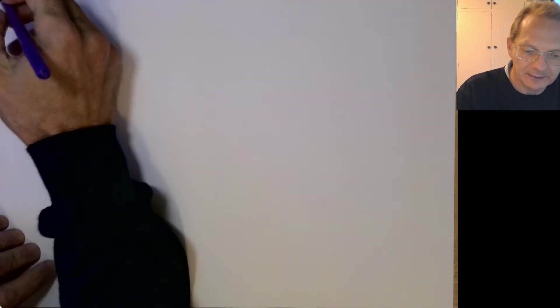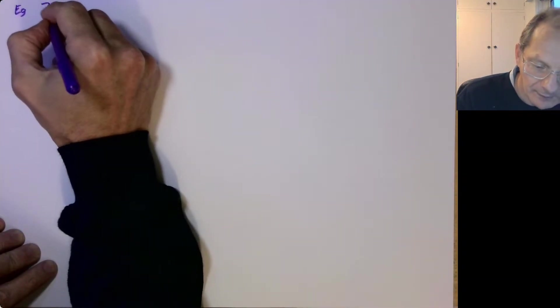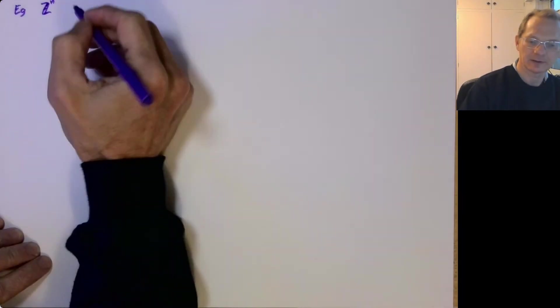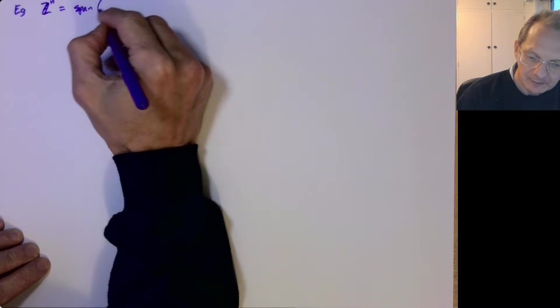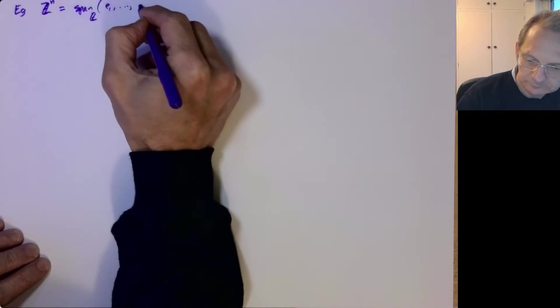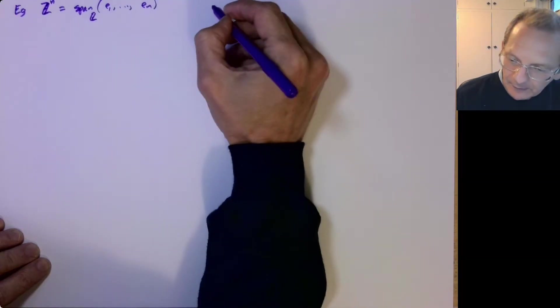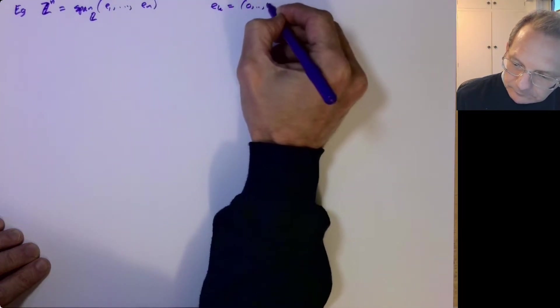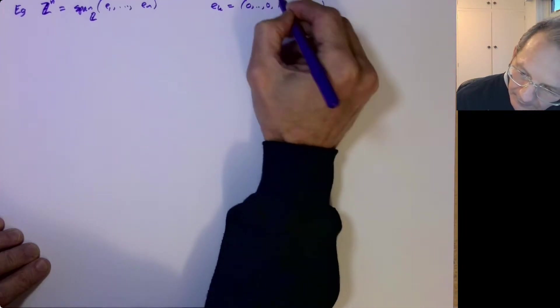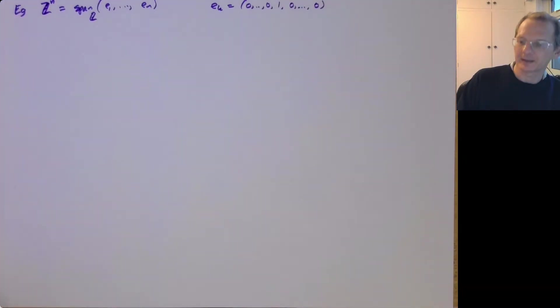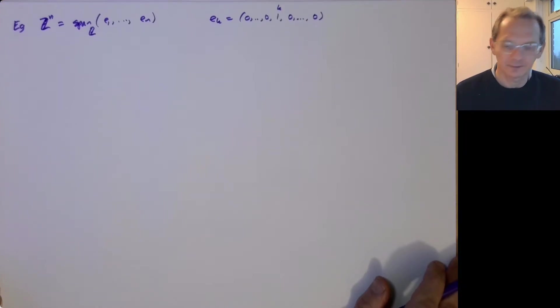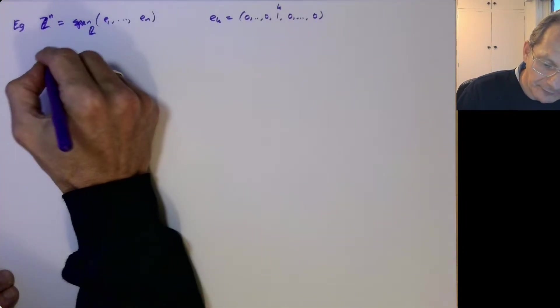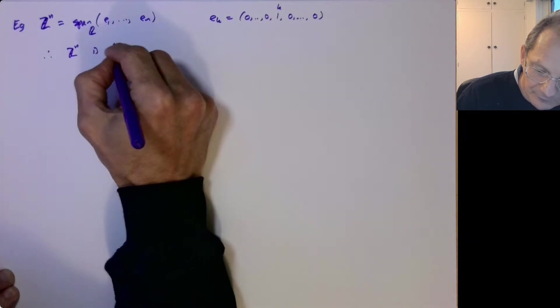So which things are finitely generated? Well, if you just look at Z to the N, well that's pretty easy to see that this is the span of your standard basis vectors, where Ek means the basis vector with a 1 in the k-th slot. So Z to the N is finitely generated.